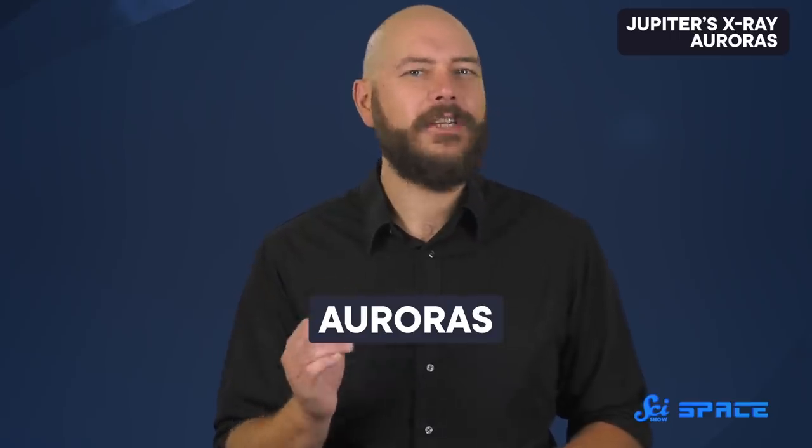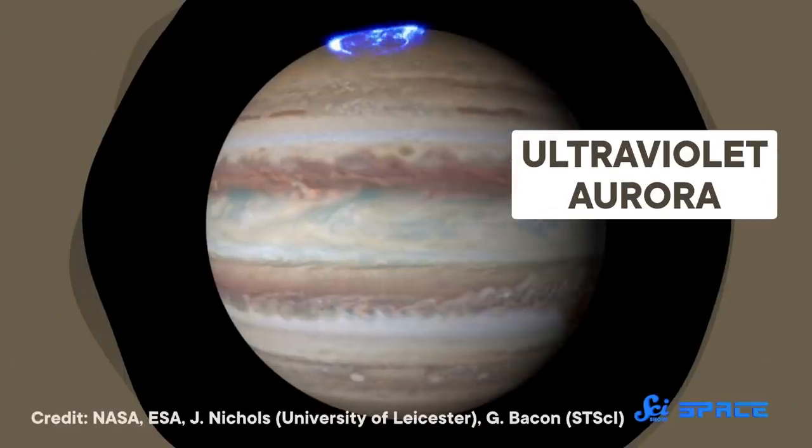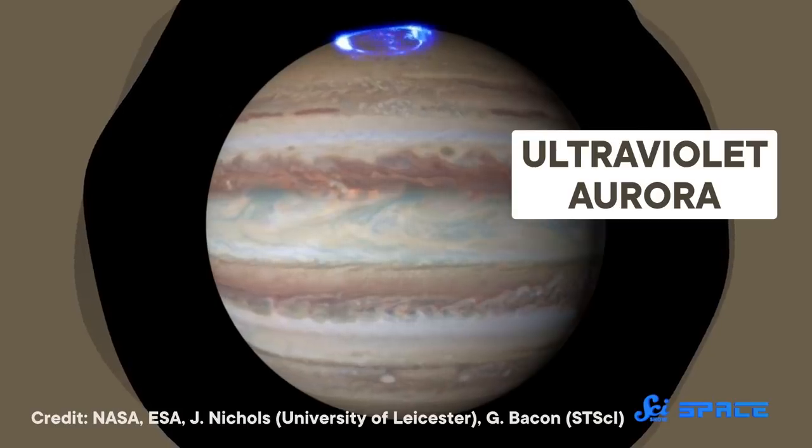After the Sun, the solar system's next most powerful magnetic environment is Jupiter's. Like Earth, Jupiter's magnetic field helps create auroras, bursts of light emitted as the magnetic field channels charged particles from space into the atmosphere. But Jupiter's auroras aren't visible to the human eye. Instead, they shine at ultraviolet, infrared, radio, and even X-ray wavelengths.